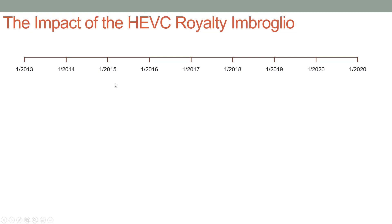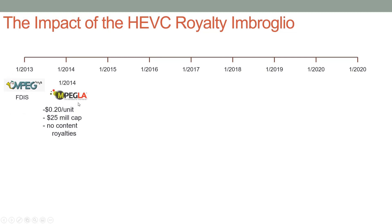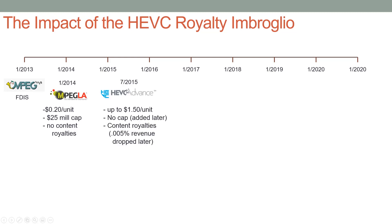Here is how the HEVC royalty schedule played out. The first draft international spec was January 2013. MPEG LA came out in January 2014 with a 20 cent per unit, $25 million cap, no content royalties pool — that was one year. Then in July 2015, HEVC Advanced (now Access Advanced) came out with a royalty policy of up to $1.50 a unit, no cap, and proposed royalties on content of $0.005 of addressable revenue. Later this was dropped and a cap was added.